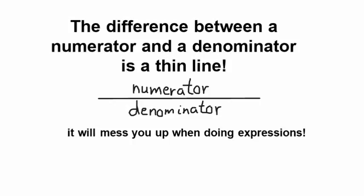There's a pretty frequent mistake I thought I'd just do a quick little movie on. The difference between a numerator and a denominator is a thin line, right? The numerator's the top part, the denominator's the bottom, and we put a thin line in between. That's one way of showing dividing. But this will mess you up every time if you don't realize that the numerator is calculated separately from the denominator.